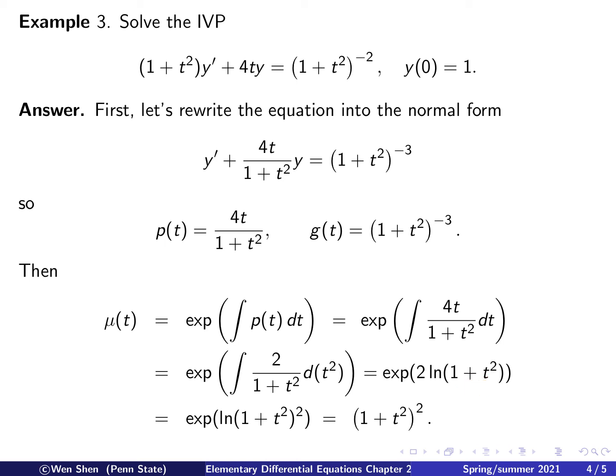How can we simplify this expression? First we see that the number 2 can be moved into the natural log as the power 2. So we'll have natural log of (1 plus t squared) squared. Now we have exponential function composing on the natural log function. These cancel each other. I will just get (1 plus t squared) squared. This is our integrating factor.